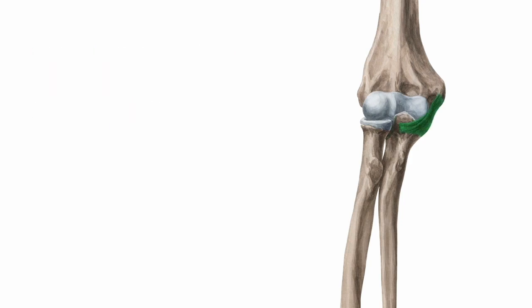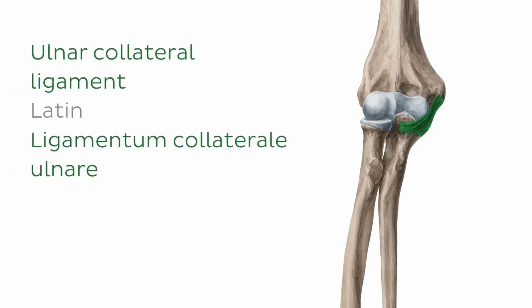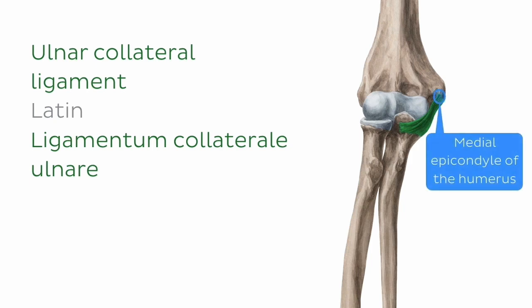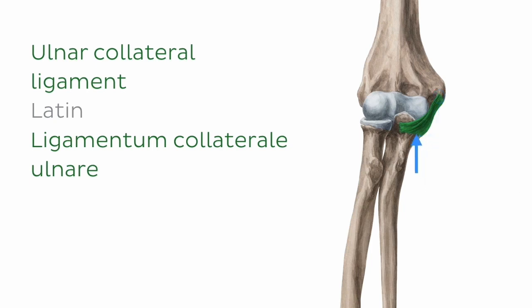Supporting the proximal end of the ulna with the humerus is this ligament here, known as the ulnar collateral ligament, which extends from the medial epicondyle of the humerus to the medial aspect of the proximal ulna.